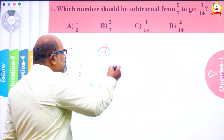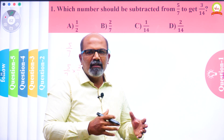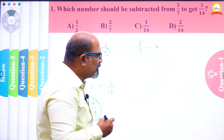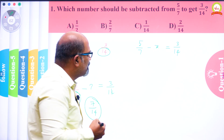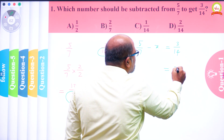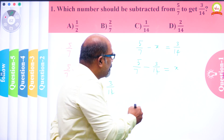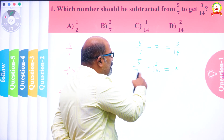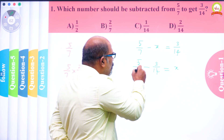The second way is the algebraic method. In this method we frame an equation: 5/7 minus x equals 3/14. To find x, we take minus x to the right side as plus x, and 3/14 comes to the right side as minus 3/14. So x equals 5/7 minus 3/14. To simplify, I make the denominators the same by converting 5/7 into an equivalent fraction with denominator 14.